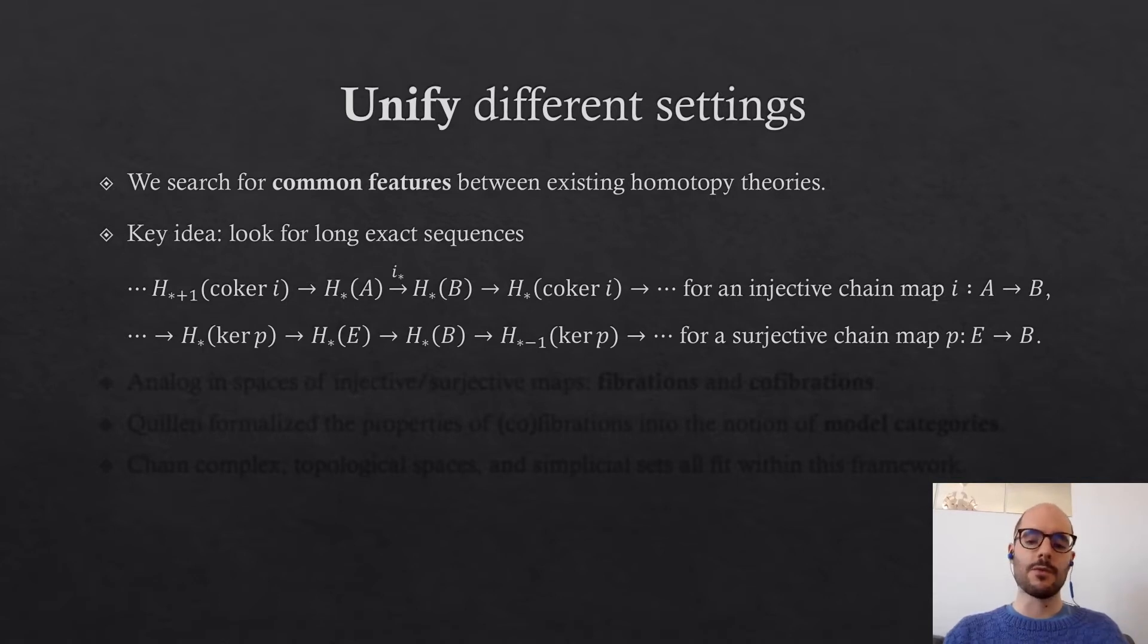In chain complexes, we know how to give long exact sequences whenever we have an injective map i from A to B. We have this long exact sequence that relates the homology of A, the homology of B, and the homology of the cokernel, also called the quotient.